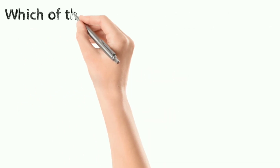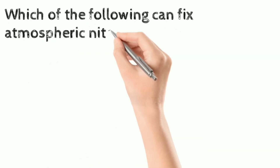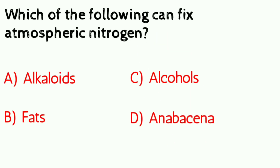Question number ten: which of the following can fix atmospheric nitrogen? a) alkaloids, b) fats, c) alcohols, d) Anabaena. Correct answer is Anabaena.